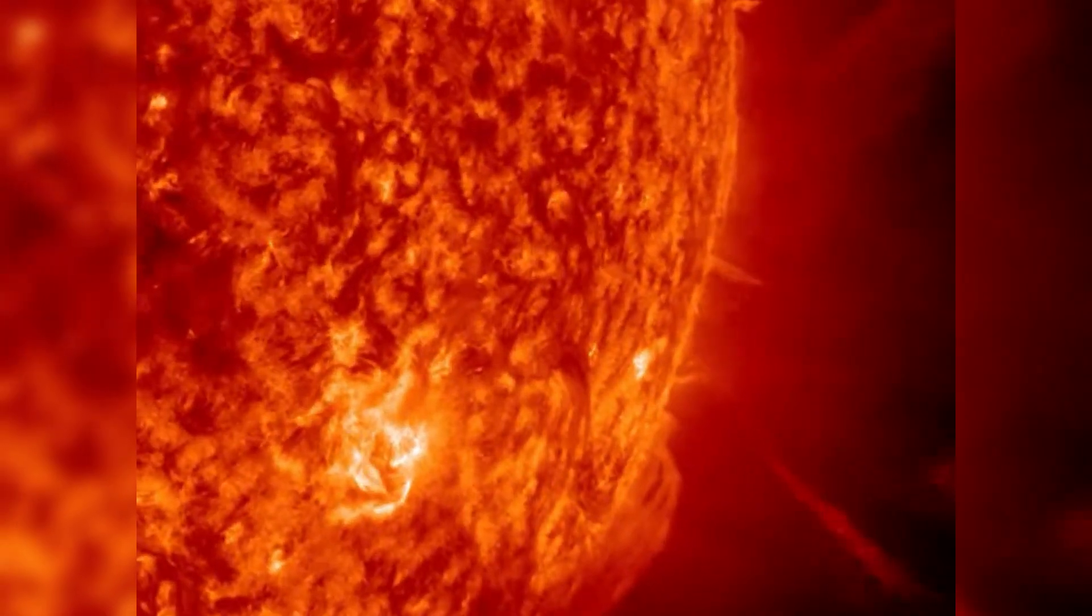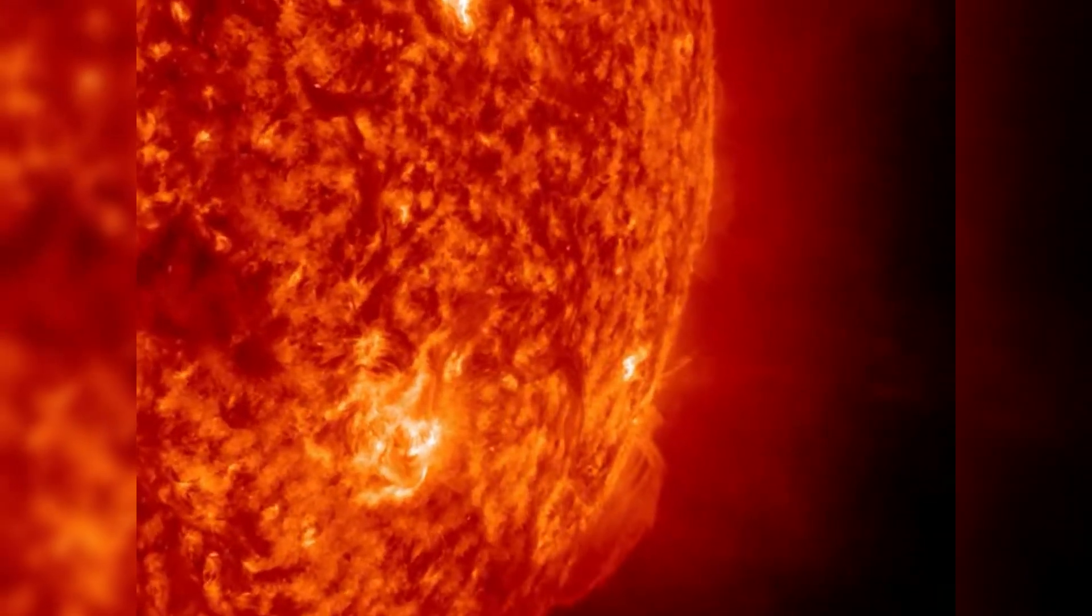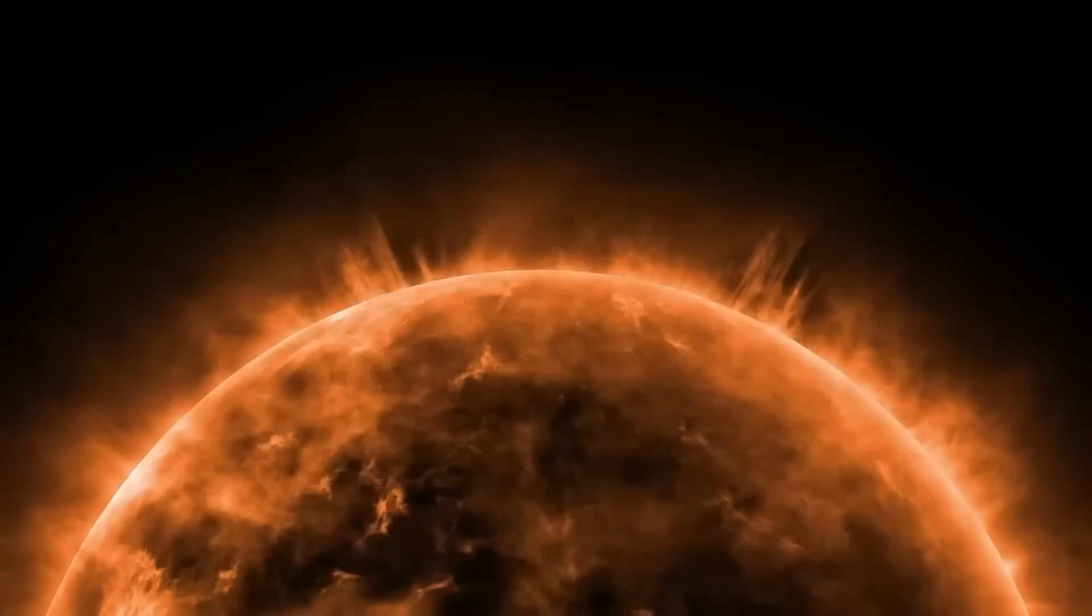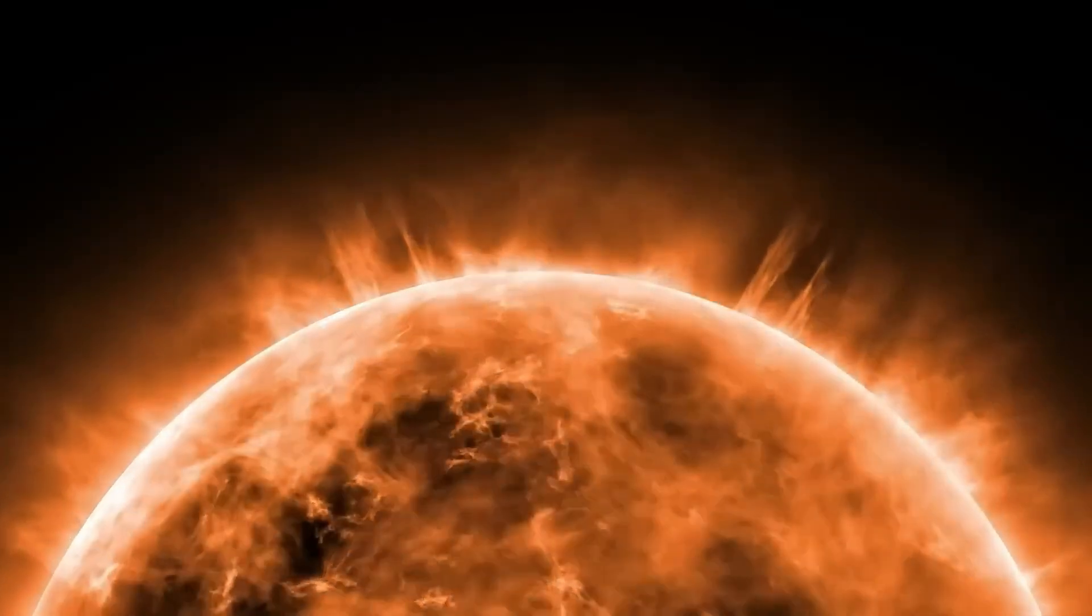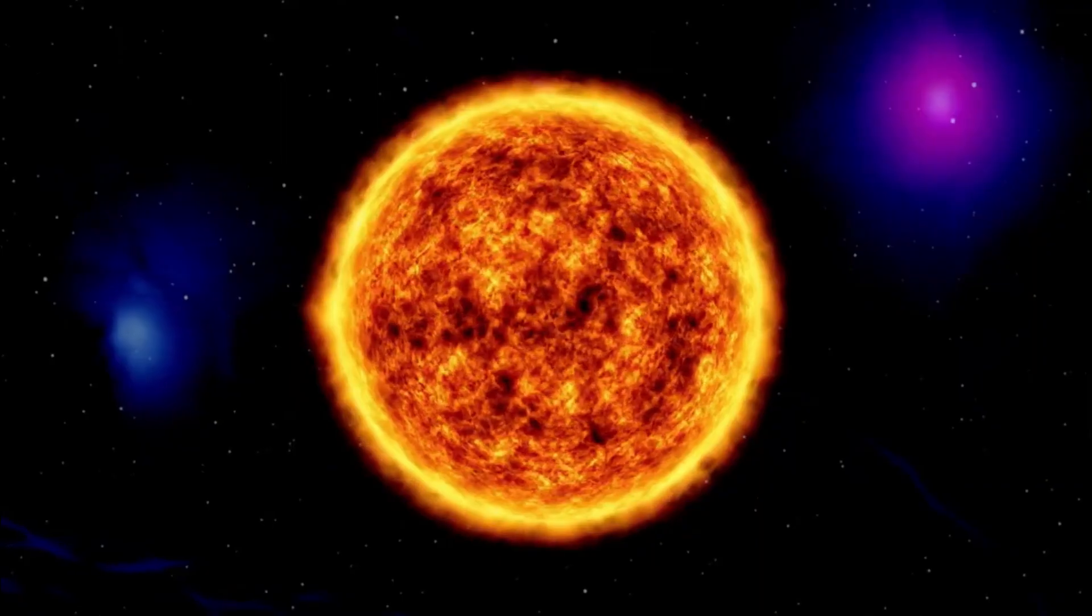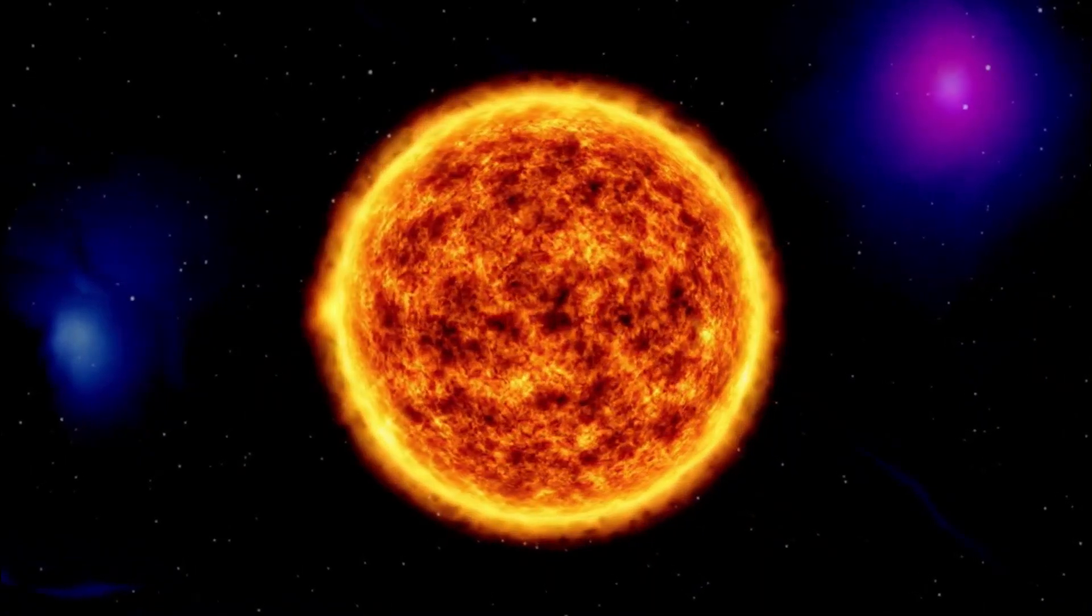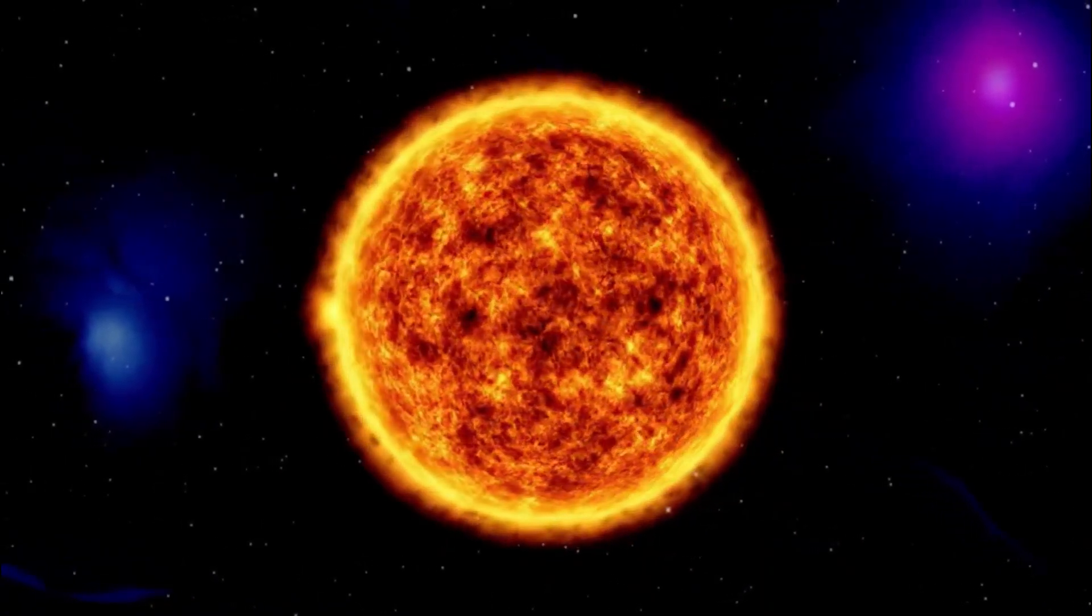In addition, red supergiant stars feature surface convective cells that are comparable to, but considerably larger than, our sun's. These cells allow hot material to rise from the star's interior as a result of turbulence.